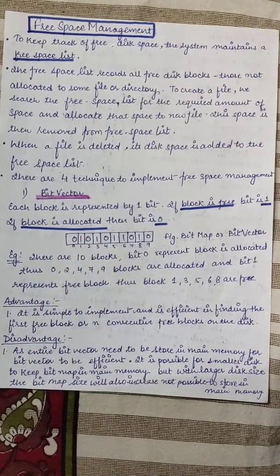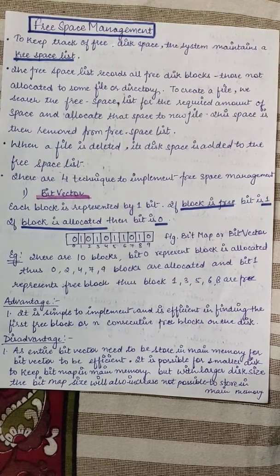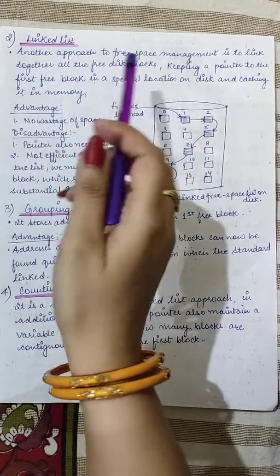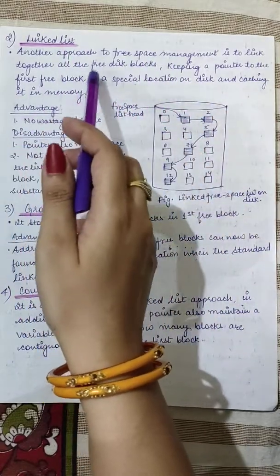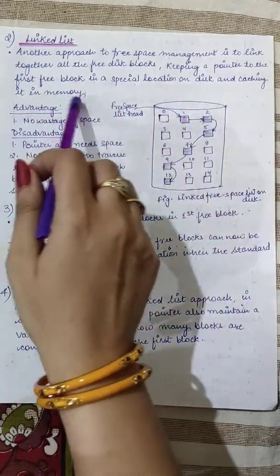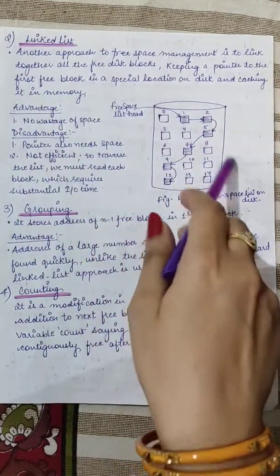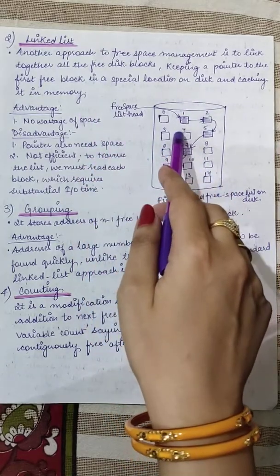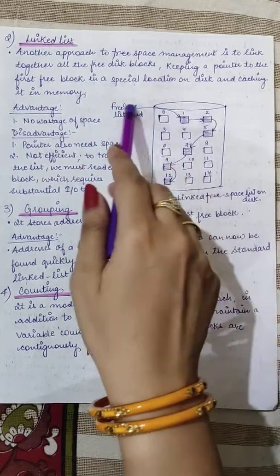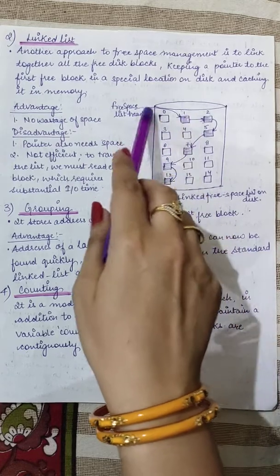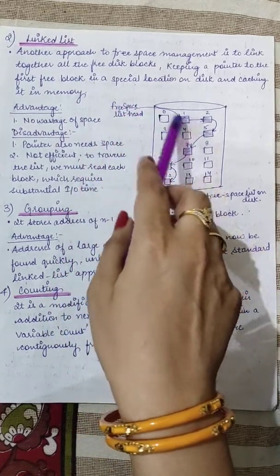The next technique is the linked list approach. Another approach to free space management is to link together all the free disk blocks, keeping a pointer to the first free block in a special location on disk and caching it in memory. The free blocks contain pointers — the first block is the head node, and it contains the pointer to the next free block.